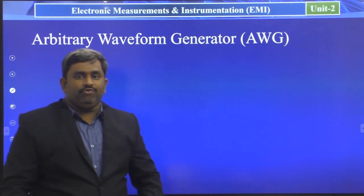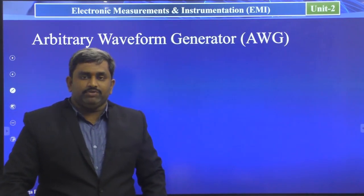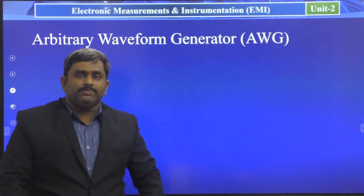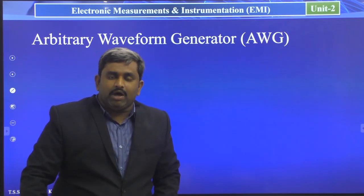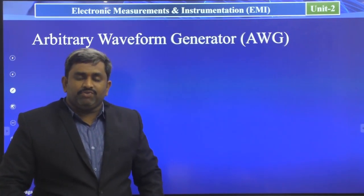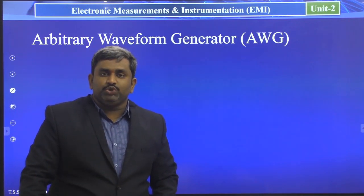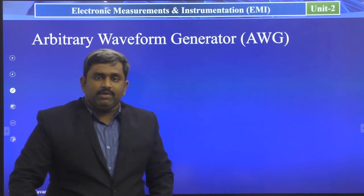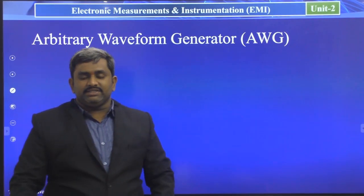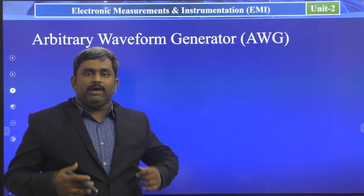So what is this Arbitrary Waveform Generator? Up to now we have seen different types of signal generators like Function Generator, Sine Wave Generator, Square Wave and Pulse Wave Generators, Random Noise Generators, and Sweep Generators. These are all signal generators working for a specific function. For example, the Square Waveform Generator generates a 50% duty cycle square waveform, and the Pulse Generator is a square wave generator where the duty cycle can be varied. Each signal generator has a specific function to meet the goal of the users.